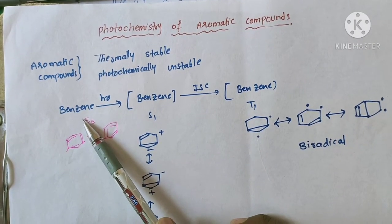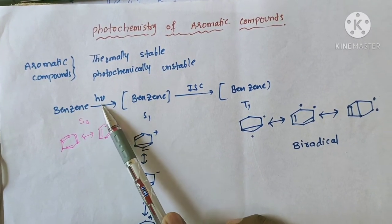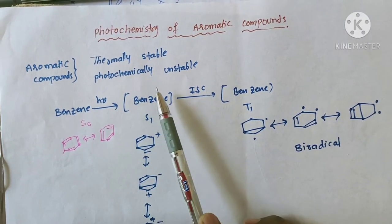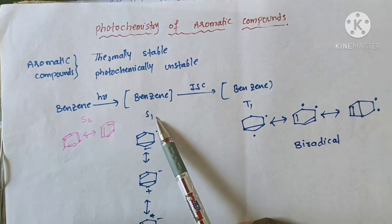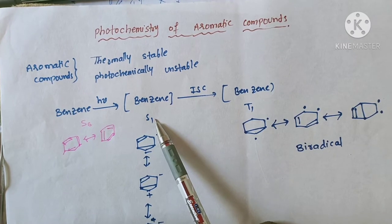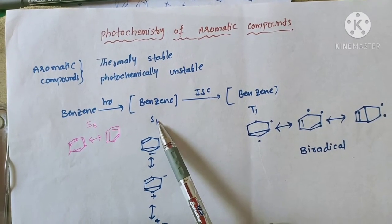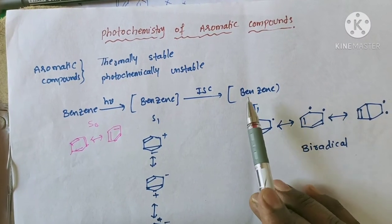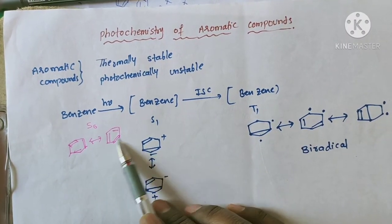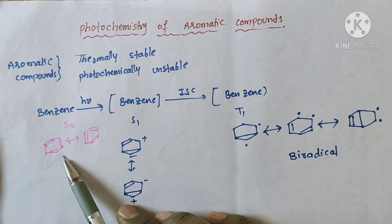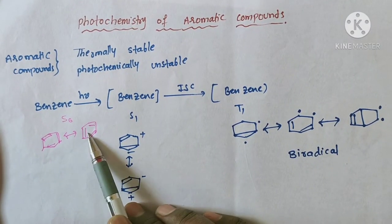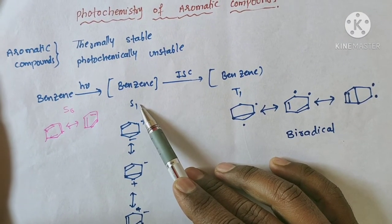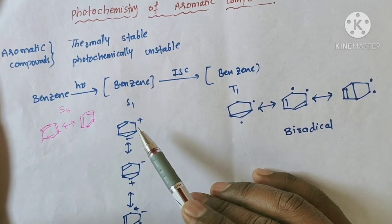Any organic compound — for example, benzene — when irradiated undergoes excitation and forms the excited singlet state. And then, these excited singlet states undergo intersystem crossing and form the triplet state. The two canonical structures represent the ground state singlet of benzene. In the excited singlet state, benzene forms a zwitterion.